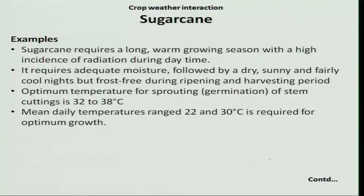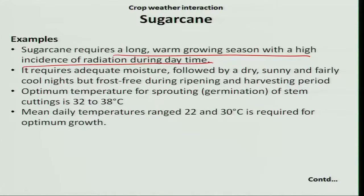Let us see the crop weather interaction for sugar cane. Sugar cane requires a long warm growing season with a high incidence of solar radiation during the daytime, because sugar cane produces more than 100 tons of biomass triggered by the photosynthesis process. Therefore, it requires a long warm growing season with high solar radiation, as well as optimum moisture throughout all growth stages. It can be cultivated in the early season and also in the late season.